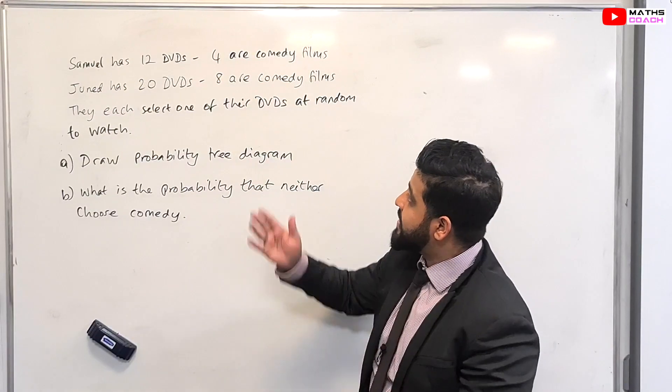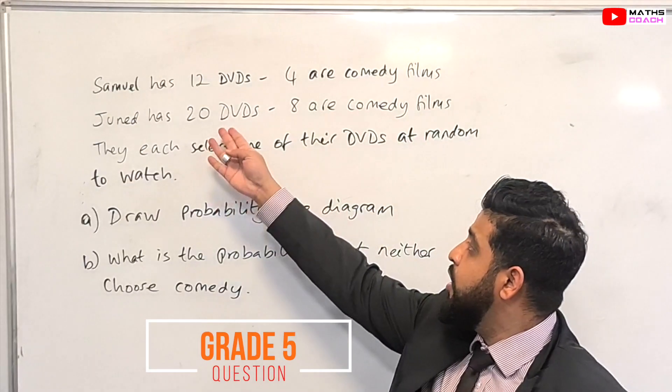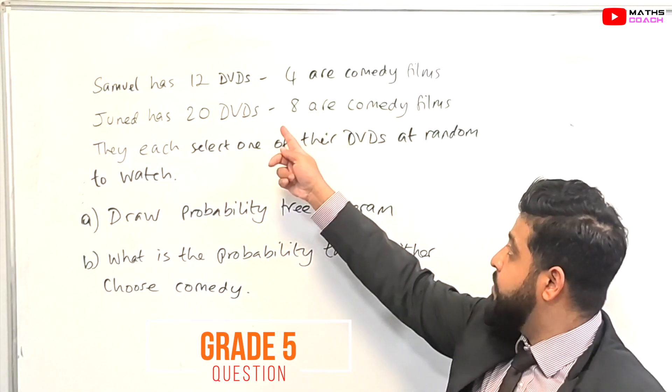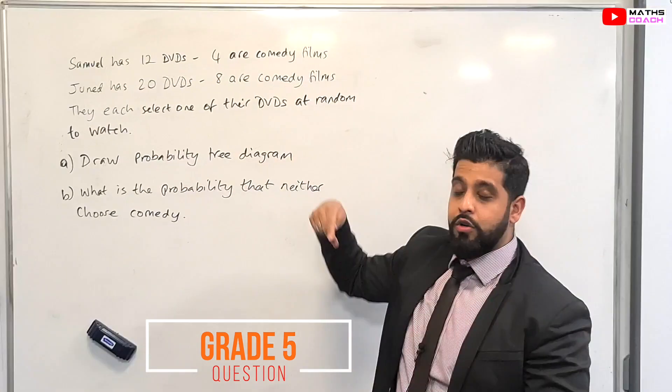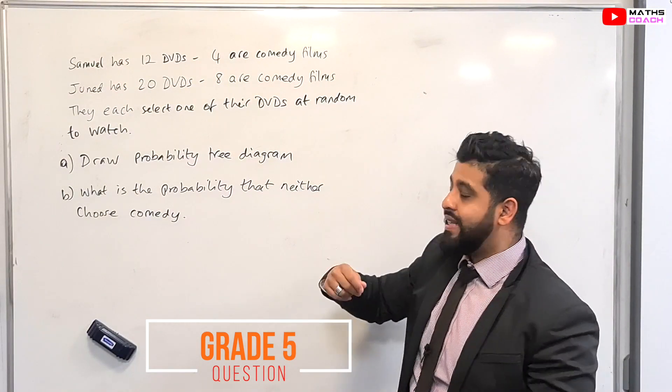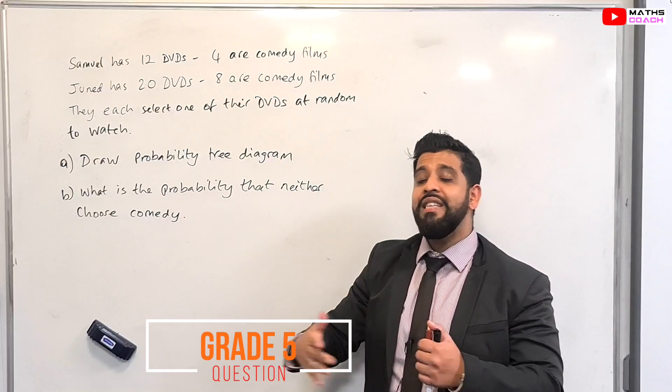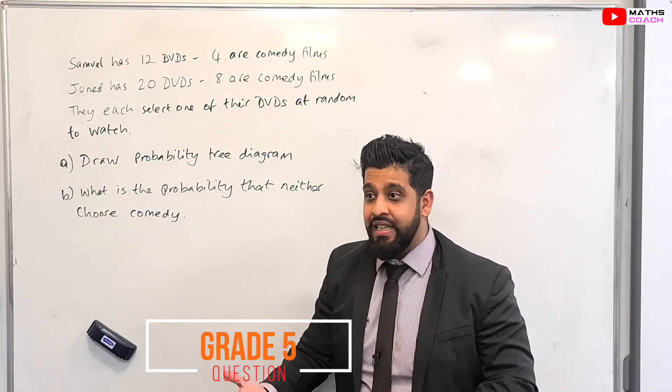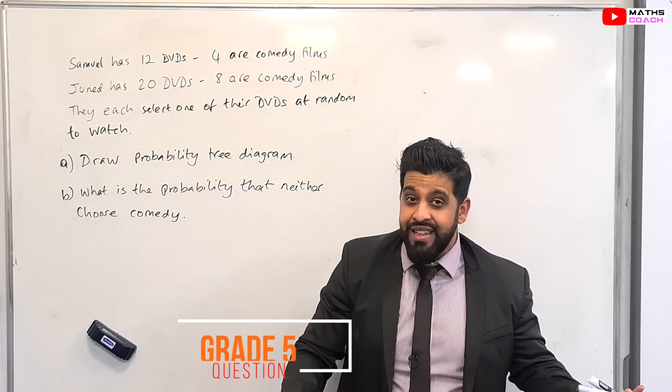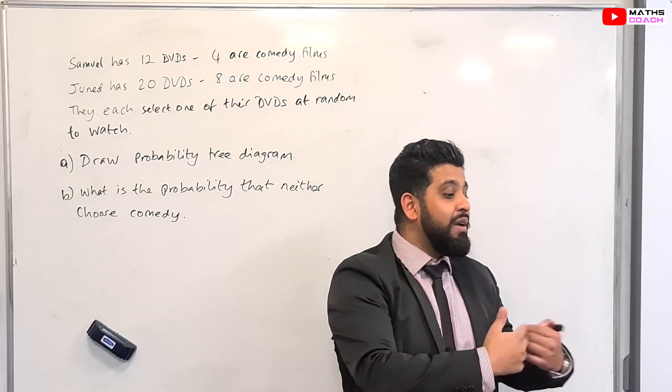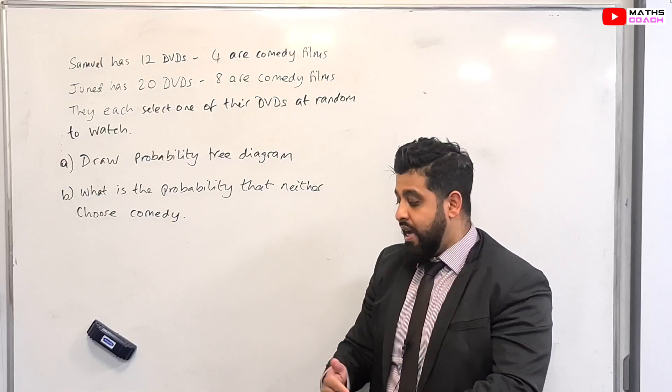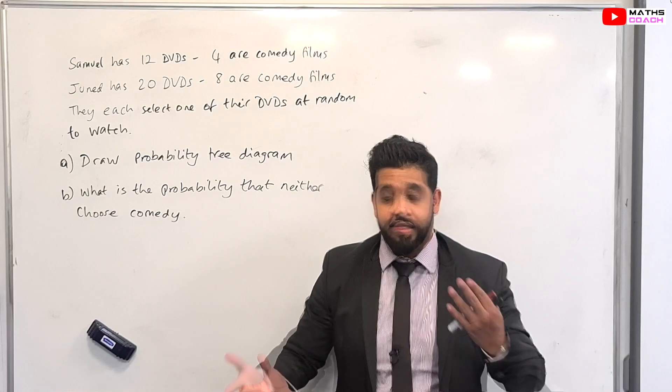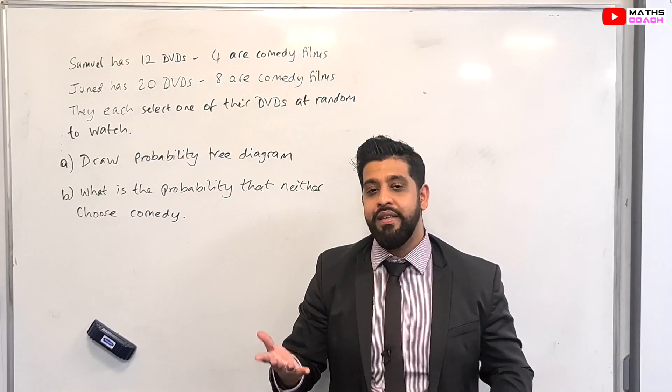Behind me we have Samuel who has 12 DVDs and we have Junaid who has 20 DVDs. Four of Samuel's DVDs are comedy films and eight of Junaid's are comedy films. So they are both going to select one of the DVDs at random. So if these two events are independent, if Samuel selects a particular DVD it doesn't matter what he selected, Junaid will select whatever DVD he wants to watch. He's not going to look at Samuel's one and say oh because you chose this DVD I'm going to choose another one. He's going to choose it regardless. This is what is known as independent events.